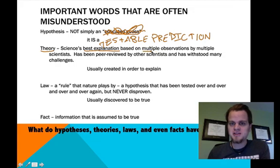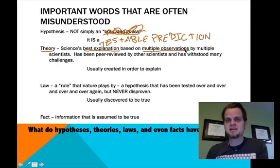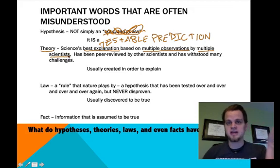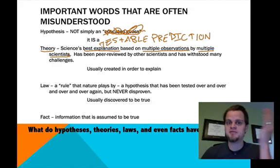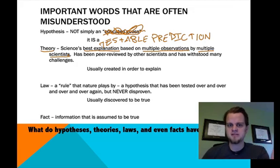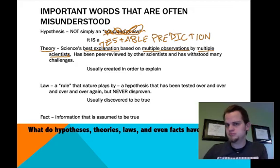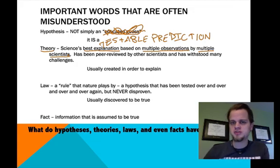A theory is based on multiple observations — lots and lots of data — and it's done by multiple scientists. There's rarely a theory with only one scientist working on it. Einstein's theory of relativity is an example, but it's been verified and modified by more and more contemporary scientists. It's also been peer-reviewed — it's not something somebody just makes up. Lots of scientists come together and try to poke holes in the argument.